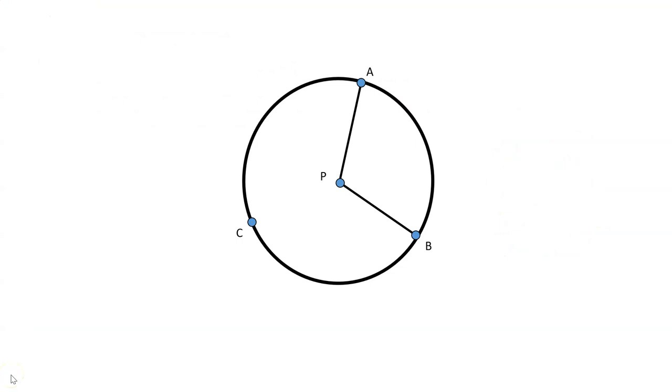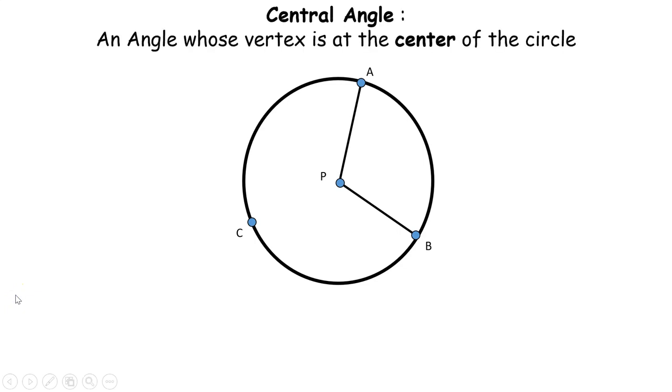Here's the same diagram. Look at points A, P, and B. Notice that P is the center of the circle. Notice that we have angle APB, and that is our central angle.